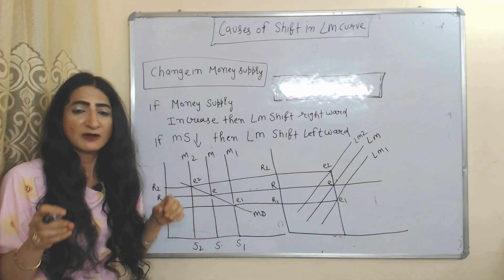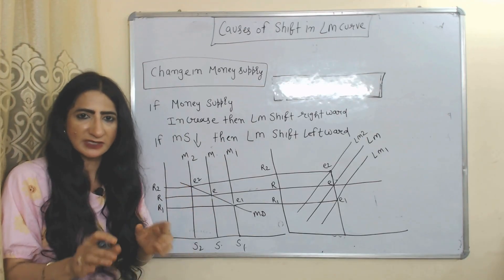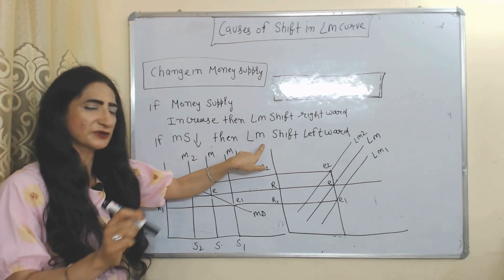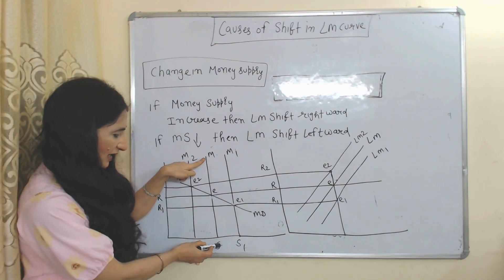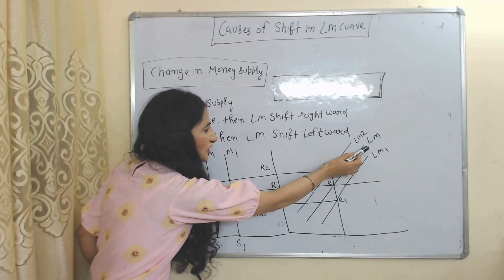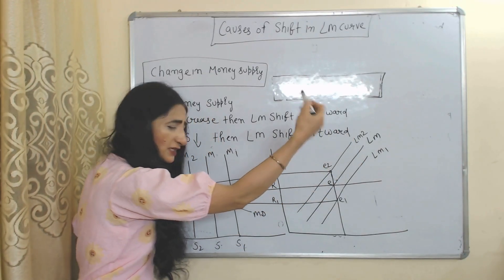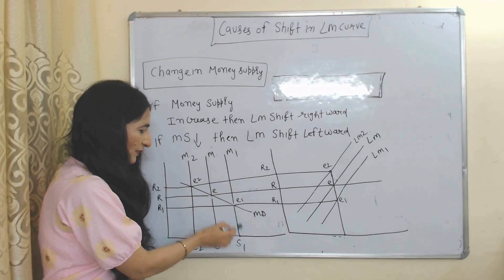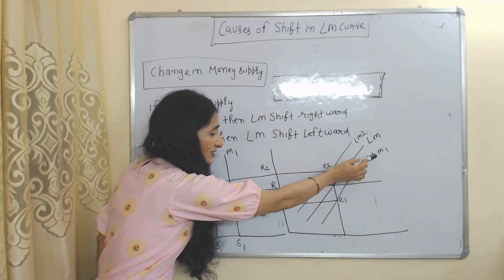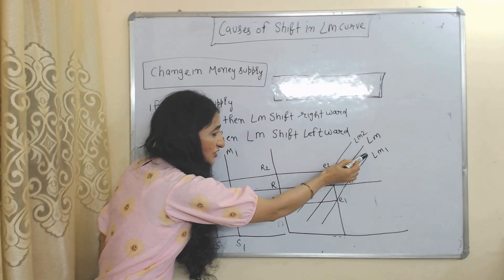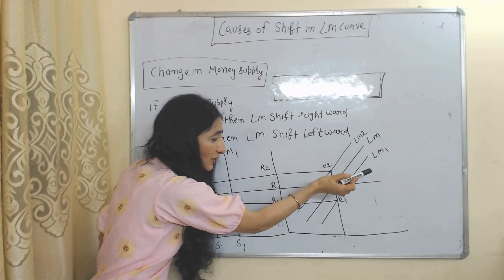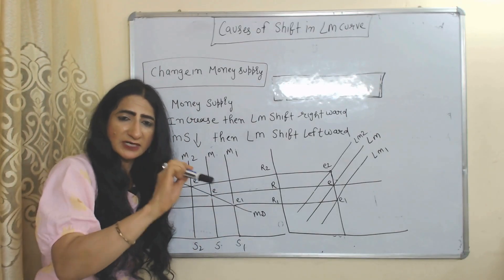Now we will see causes of shift in the LM curve. The LM curve shifts due to changes in money supply and money demand. If money supply increases, LM shifts rightward; if money supply falls, LM shifts leftward. The initial money supply is MS with initial equilibrium E and initial LM curve. When money supply increases to M1S1, the new equilibrium is E1 and the LM curve shifts rightward from LM to LM1.